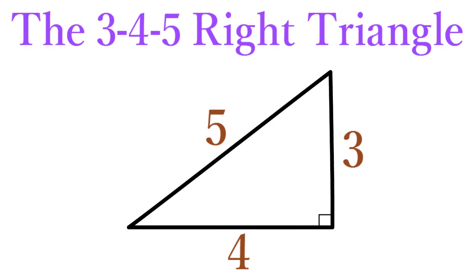As you can see, this triangle has two legs whose lengths are 3 and 4, and a hypotenuse of length 5. Recall that the hypotenuse is always the longest side of a right triangle.